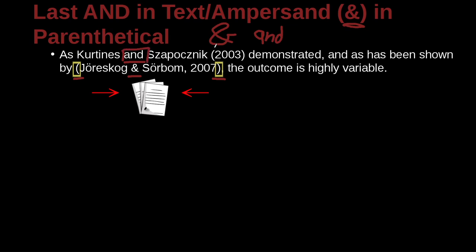In the first citation, the parentheses contain just the year, so we use 'and.' The second citation, however, is inside the parentheses with a comma — the author list, comma — and there we use an ampersand.